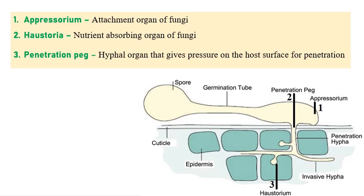Generally, appressorium is an attachment organ of fungi. It generally attaches to the leaf surface or whatever surface it lands on. When it comes to haustoria, it is generally a nutrient-absorbing organ or energy-absorbing organ of fungi, because whatever energy or food material or nutrients the fungi requires, it can absorb through this specialized organ called haustoria.